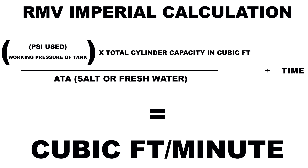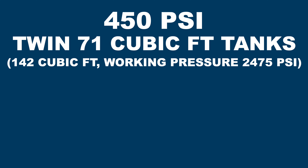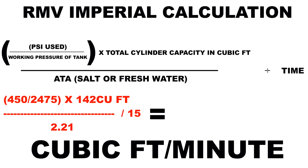Imperial is more complicated — we expected that. The beginning is a little different: take the PSI used, divide that by the working pressure of the tank, and then multiply that by the total tank capacity. Then the rest is the same. For example: say you use 450 PSI with twin 71 cubic foot tanks, giving 142 cubic feet total capacity at a working pressure of 2,475 PSI, while swimming at 40 feet for 15 minutes in salt water. Divide 450 by 2,475, multiply that by 142, then divide by the absolute pressure, then divide by the minutes of your test. That comes out to 0.78 cubic feet per minute.